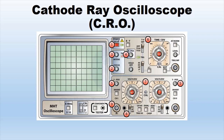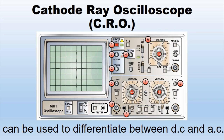The cathode ray oscilloscope, or CRO, is used in hospitals to examine heartbeats and brain waves, as well as in computer monitors and television receivers. The CRO is an electrical instrument used for showing, measuring, and analyzing waveforms and other electronic and electrical phenomena. It can be used to distinguish between DC and AC by looking at the trace displayed on the screen when the time base is switched on and off.